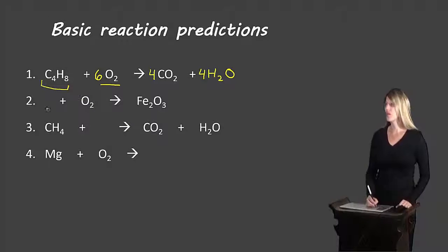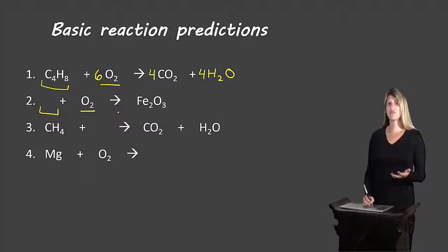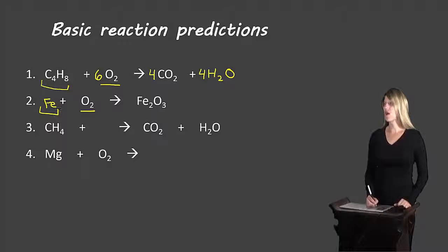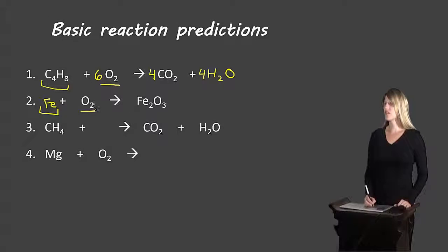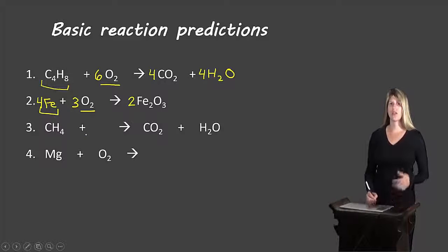In the next example, something reacts with oxygen, and because it's reacting with oxygen we have a combustion reaction, giving us iron(III) oxide. Since the product is iron(III) oxide, the missing reactant is iron. So iron reacts with oxygen to give us iron(III) oxide. To balance it: we put a 2 in front of iron(III) oxide and a 3 in front of O₂, giving us 6 oxygens on each side. Now we have 4 iron on the right, so we put a 4 on the left.